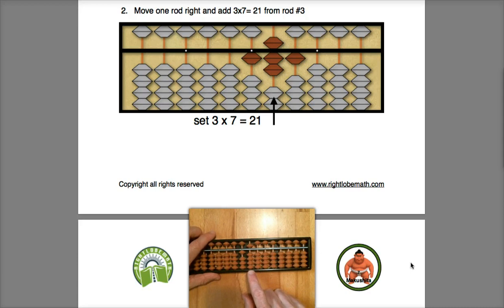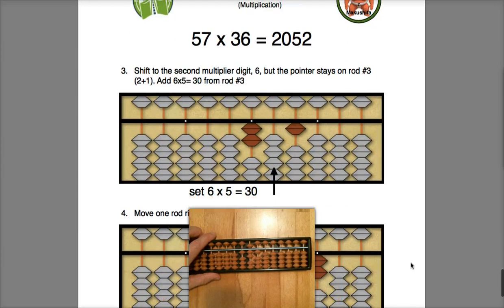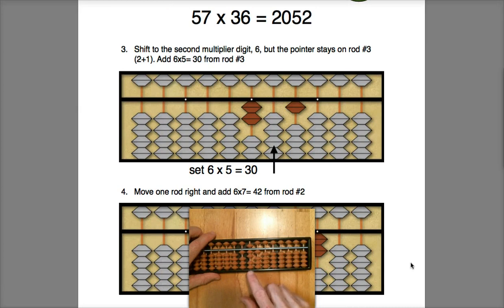Now I'm going to be shifting to the second digit of the multiplier, the 6. I'm going to keep my pointer here on rod number 3, and this time I'm going to look at 6 times 5.